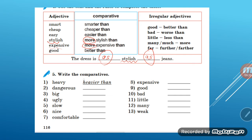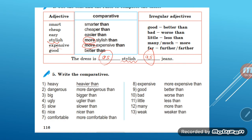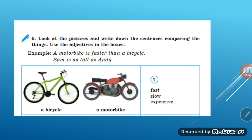Let's do exercise five — write the comparatives. You have two minutes. [Russian: Give me these words in comparative form.] Pause the video. And let's check. Let's look at the pictures and compare a bicycle and a motorbike. A motorbike is faster than a bicycle — that is a degree of comparison.